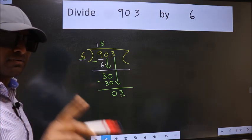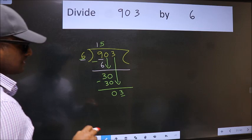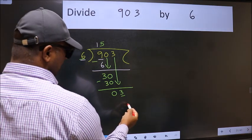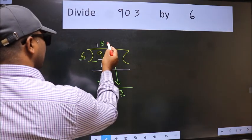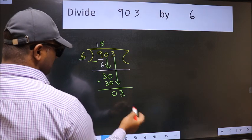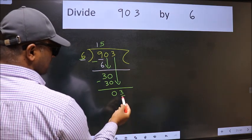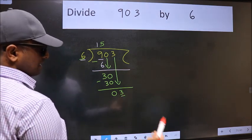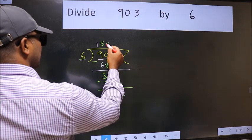Instead of that, what you should think of doing is, which number should we take here? If I take 1, we will get 6. But 6 is larger than 3. So what we do is, we take 0.